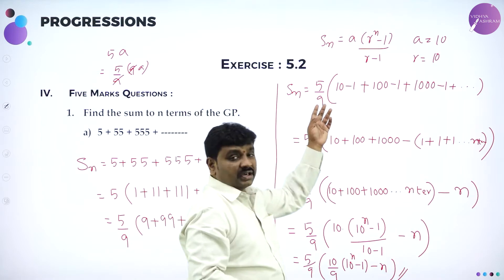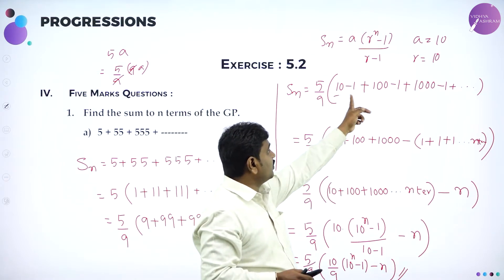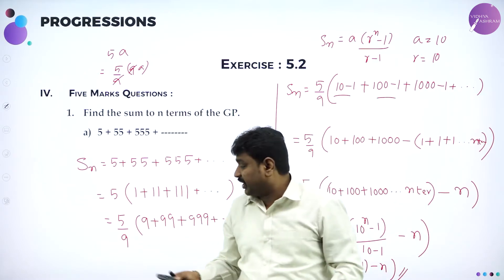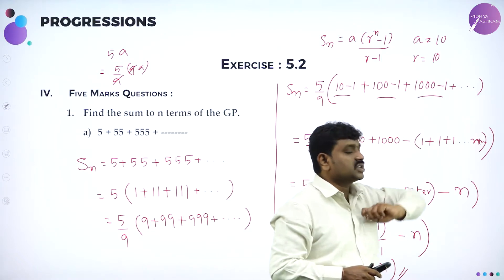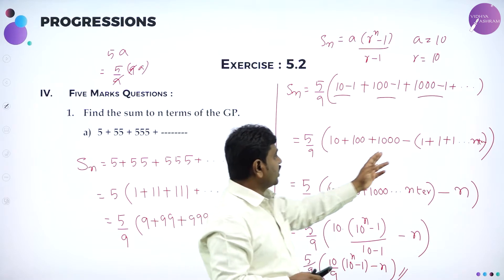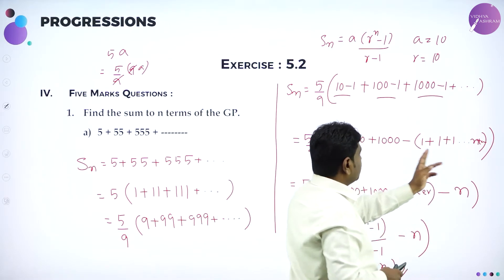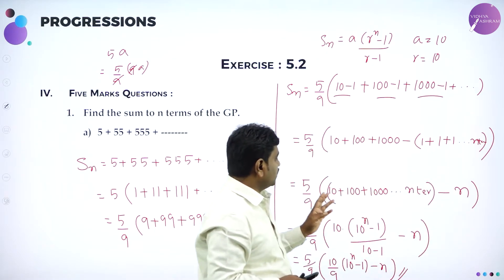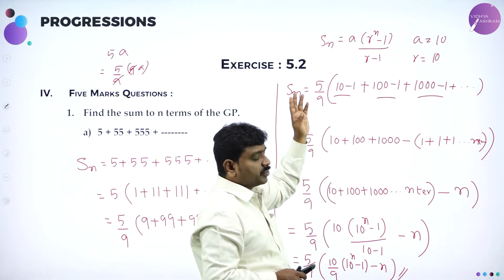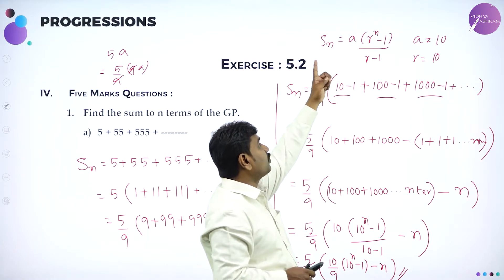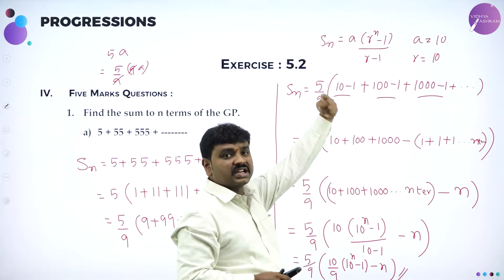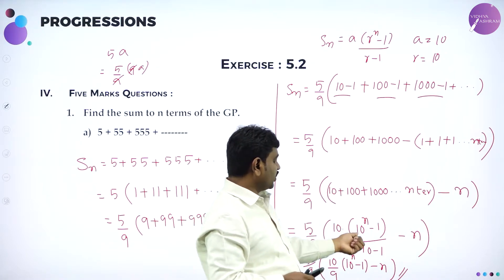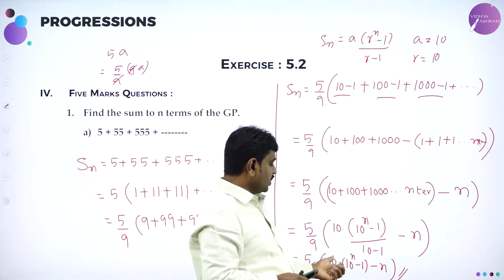Then further, 9 can be written in terms of 10: 9 as 10 minus 1, 99 as 100 minus 1, 999 as 1000 minus 1. Group the minus 1 terms — take minus common — it becomes 1 plus 1 plus 1 for n terms, which gives n. And 10, 100, 1000 are in GP. What is the sum of n terms in GP? A × (r^n − 1) / (r − 1), where r > 1. Here r = 10 and A = 10: 10 × (10^n − 1) / 9. This is the answer.